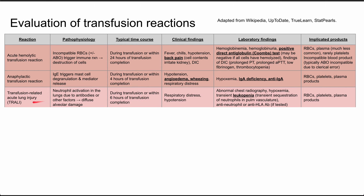Next is TRALI — transfusion related acute lung injury. Here you have neutrophils activating in the lungs due to antibodies or other factors in the donated blood products. This causes diffuse alveolar damage and you get an ARDS-type picture. This can happen during the transfusion or within six hours of transfusion completion. Symptoms include respiratory distress and hypotension, and you can't really differentiate TRALI based on clinical findings alone.